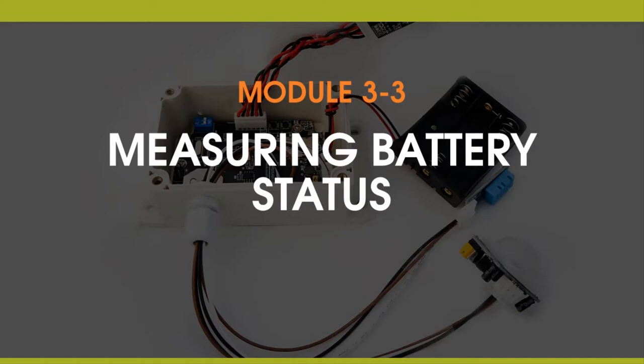In Module 3-2, we learned how to sense temperature and humidity using the DHT11 sensor. In this lab, we're going to learn more about how analog-to-digital converters work and how we can use it to monitor our battery status. It'll be important for us to monitor the battery voltage because it'll let us know how quickly our battery is draining and what our battery life in the field is.